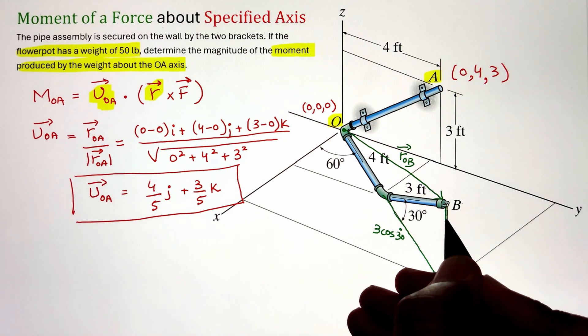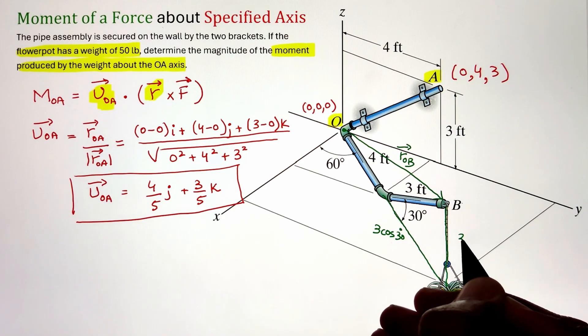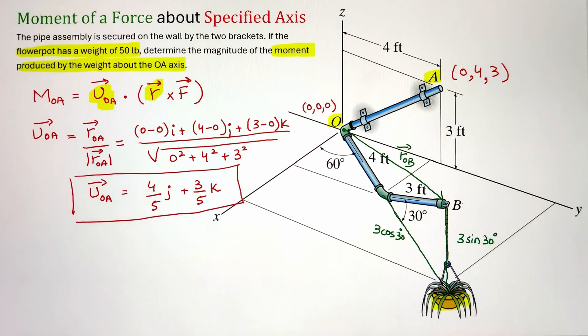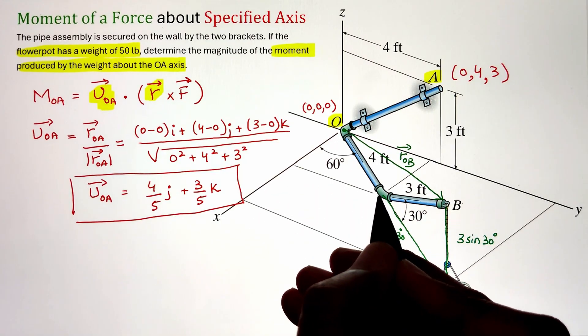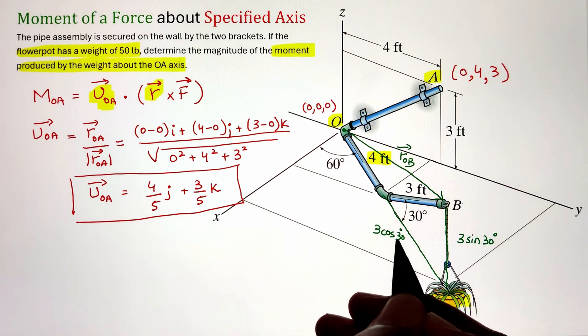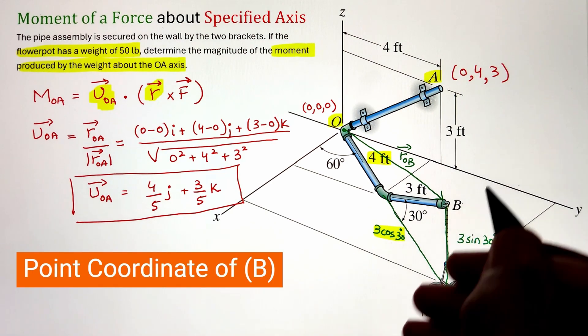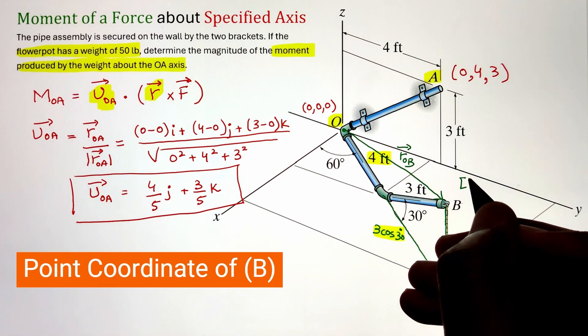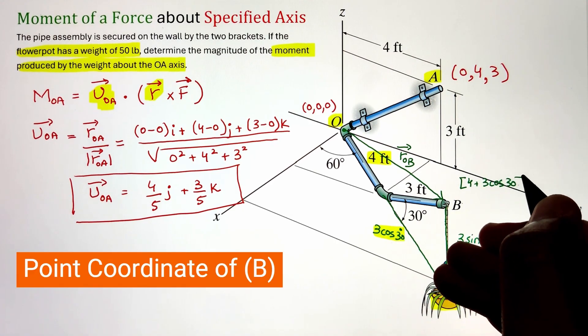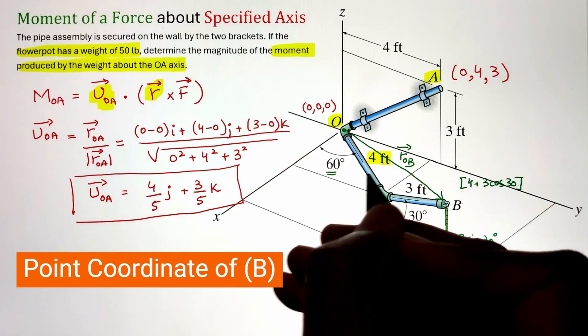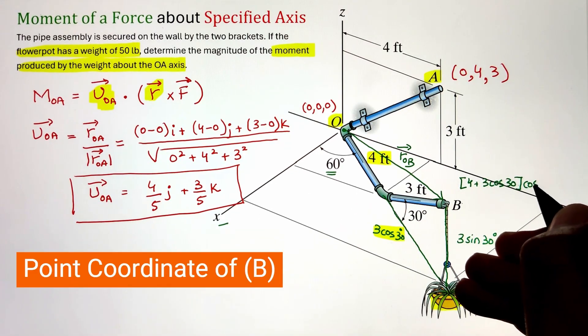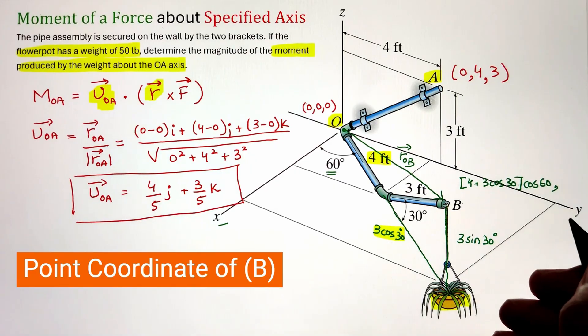So let's figure out this value of moment arm. To do that we have to identify the point coordinates of B. Now here we have a pipe that is tilted at an angle of 30 degrees with respect to our XY plane having a length of 3 feet. We can project that along our XY plane by taking the cos 30 function whereas if we take the sin 30 function it will project it along the Z axis. Once we have that, the total length from point O all the way towards the flower pot will be the sum of 4 feet plus 3 cos 30.